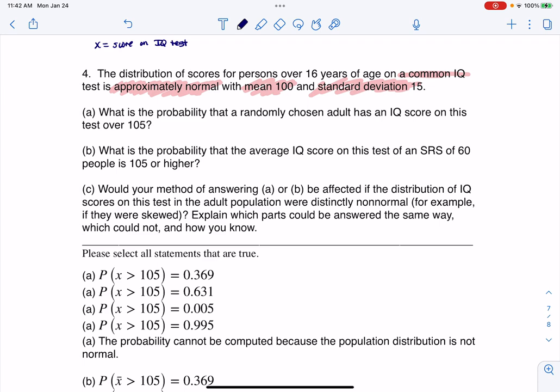It's numerical, right? And they're telling me it's normally distributed with a mean of 100 and a standard deviation of 15. This first part says, what is the probability that a randomly chosen adult has an IQ score on this test over 105? Let's figure that out.